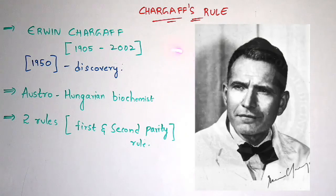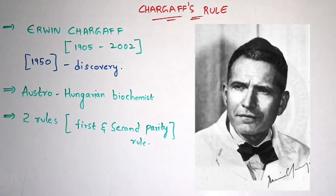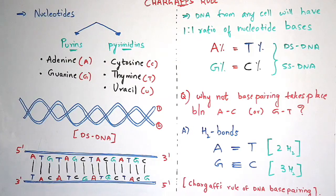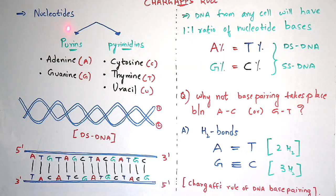Before entering into these rules, you should know about nucleotides, which consist of both purines and pyrimidines. Nucleotides are the nitrogenous bases classified into purines and pyrimidines, and you can find them in the structure of DNA — Deoxyribose Nucleic Acid. Purines consist of adenine and guanine.